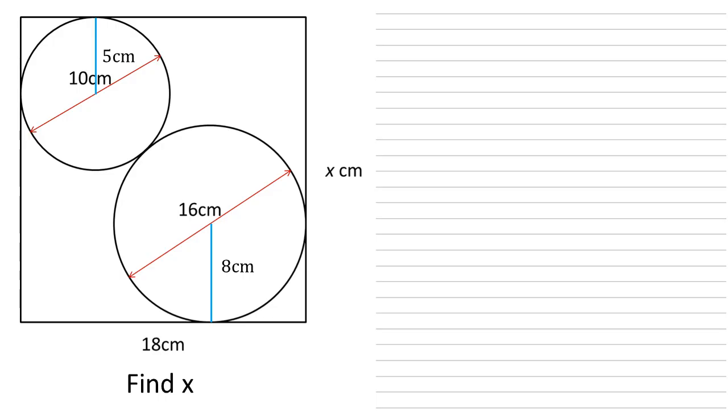So if we can find the vertical distance between them which I'm going to call Y centimeters we can use this to find X because X must be equal to the five at the top plus that Y plus the eight at the bottom so it's equal to Y plus 13.